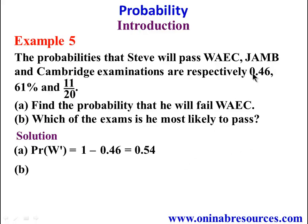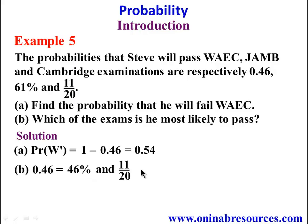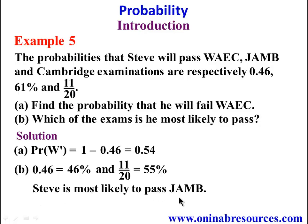For part B, we compare the probabilities of passing WAEC, JAM, and Cambridge: 0.46, 61%, and 11/20. Converting to percentages: 0.46 × 100% = 46%, and 11/20 × 100% = 55%. Comparing 61%, 46%, and 55%, since 61% is the highest and that is the probability for JAM, Steve is most likely to pass JAM.